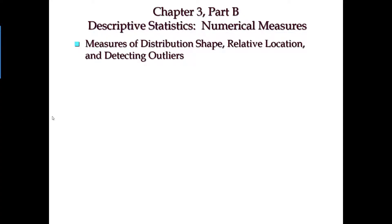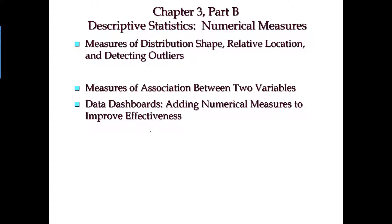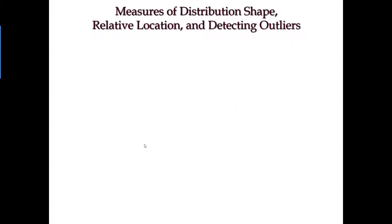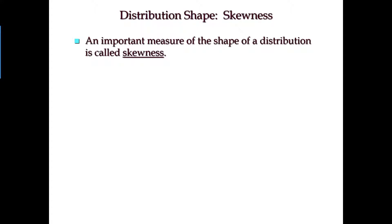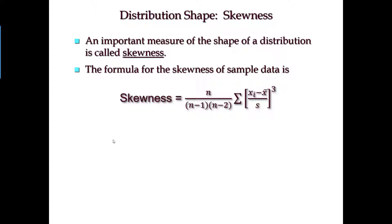First, let's look at how we're going to measure the shape of distribution. We're going to use the same term called skew, but this statistic has a name called skewness. So that's what we're going to cover: the shape, relative location, detecting outliers, and then using the statistic to measure relationships. The shape of distribution is measured by skewness, and the statistic we use is also called skewness.